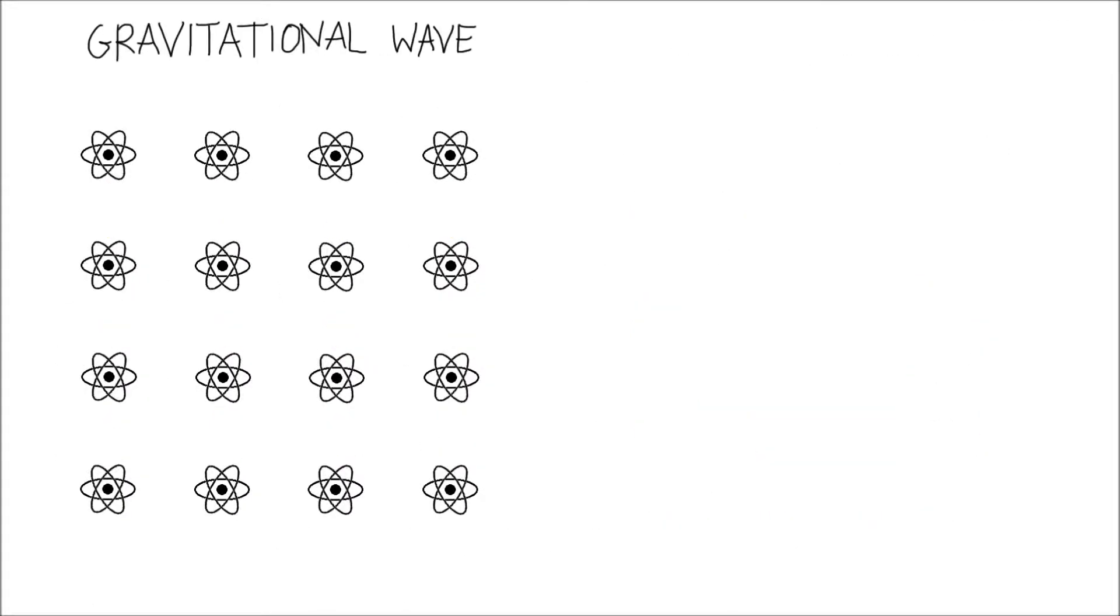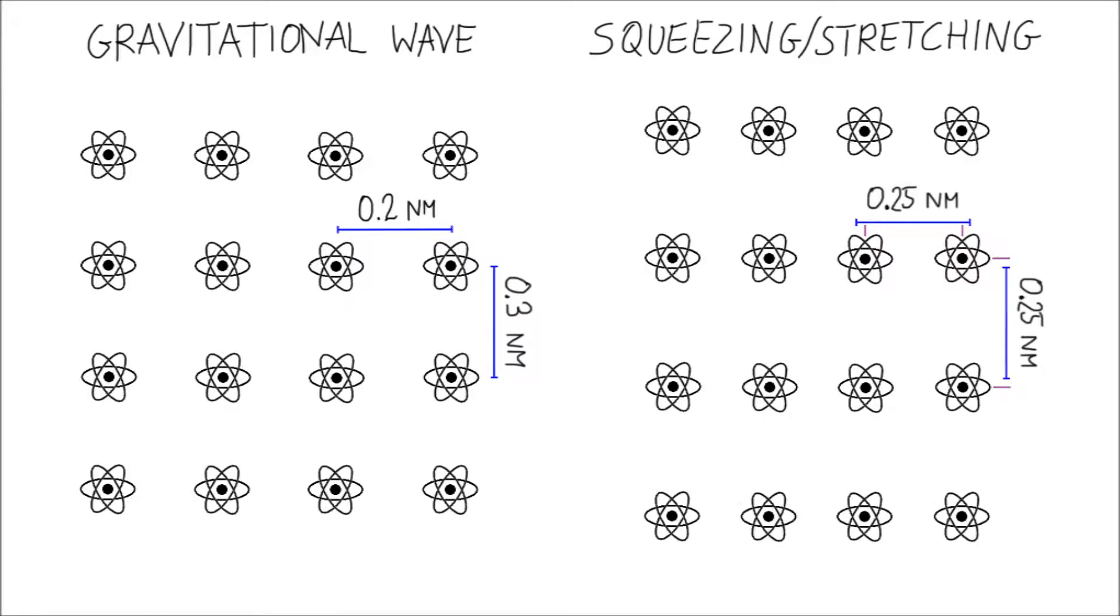When a gravitational wave passes by, the atoms find themselves further apart in one direction, but closer in the other. The same thing would happen if the material was squeezed and stretched. This is why we say that a passing gravitational wave squeezes and stretches things out.